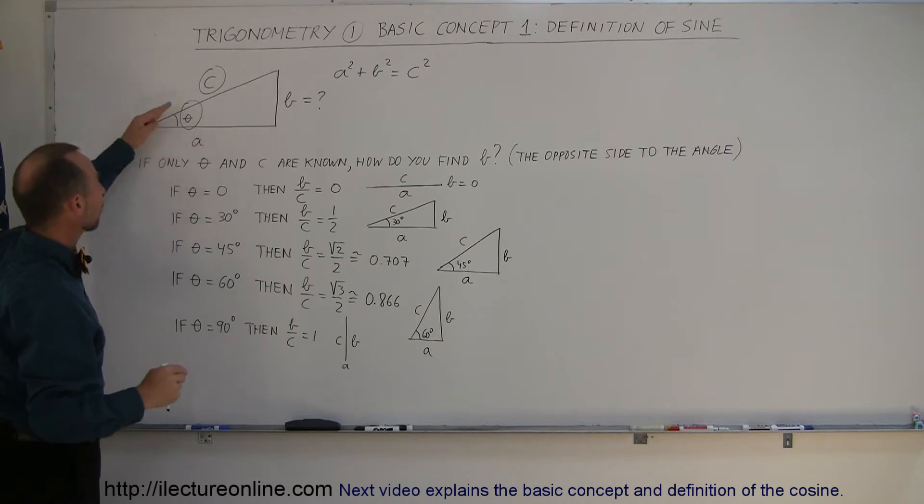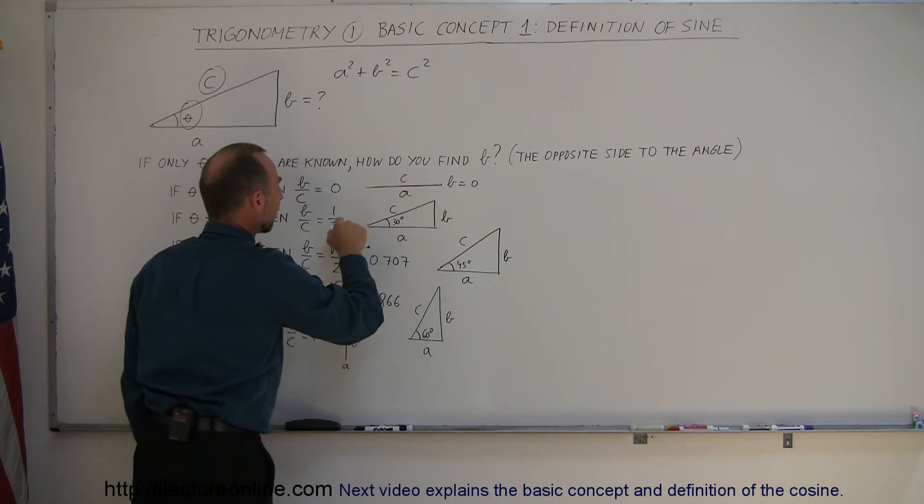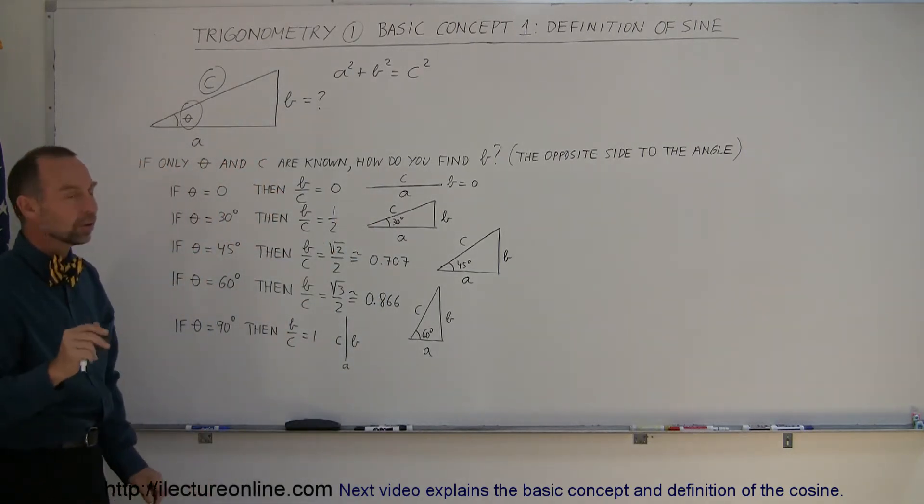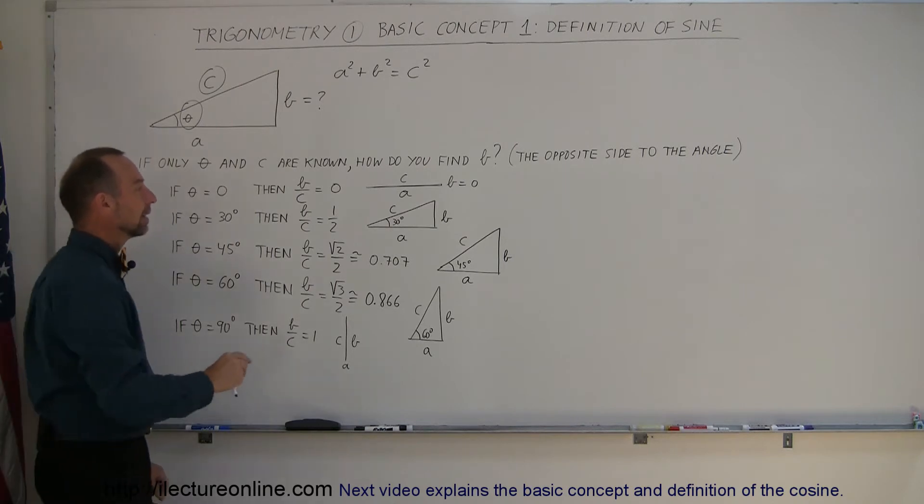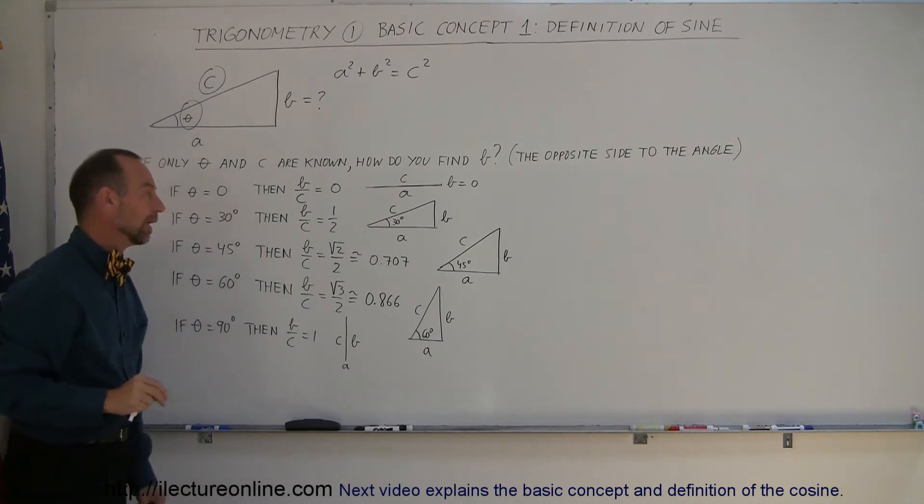But if the angle is 30 degrees, then the ratio of the opposite side to the hypotenuse happens to be equal to one half. You don't need to know yet why that is so. We'll look at that later, but just accept that if it's 30 degrees, this side divided by the hypotenuse is exactly equal to one half.